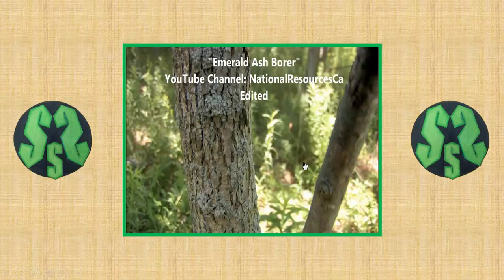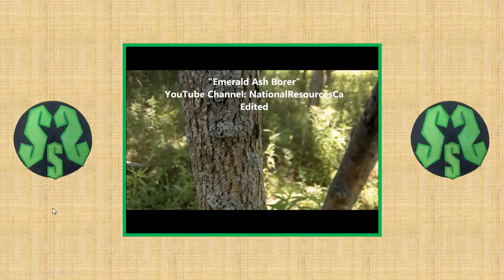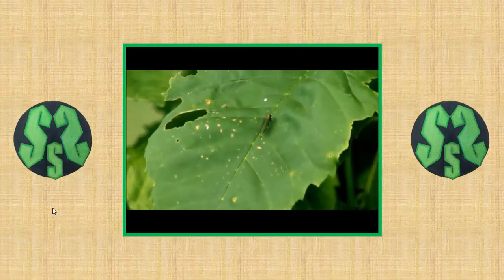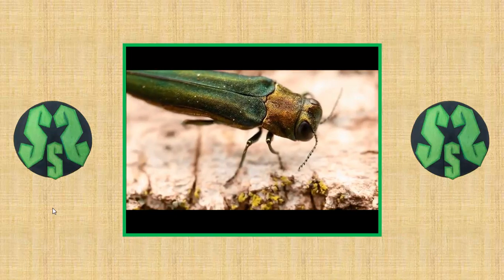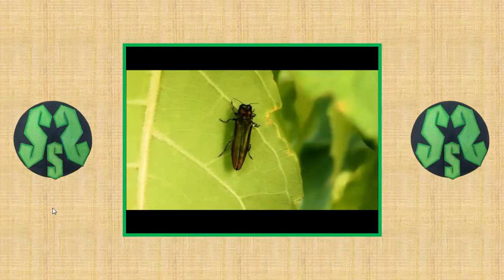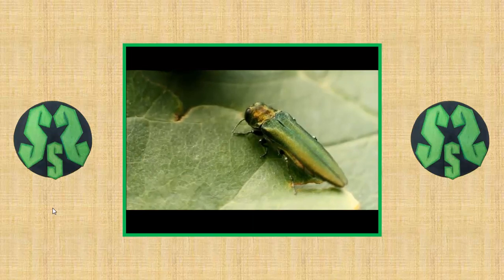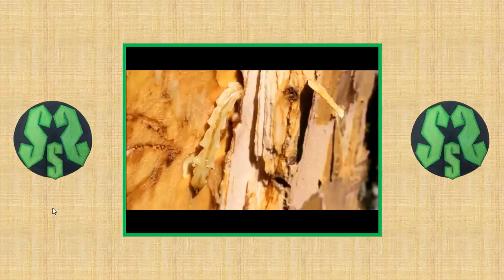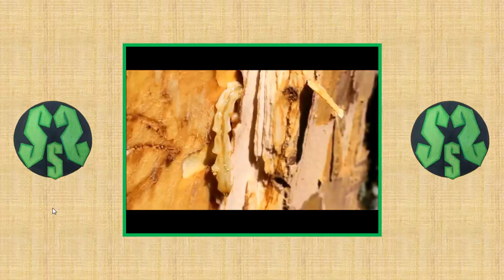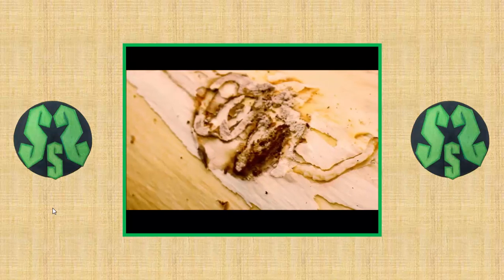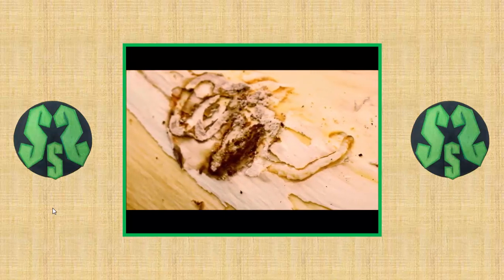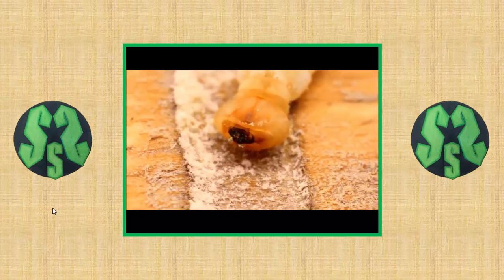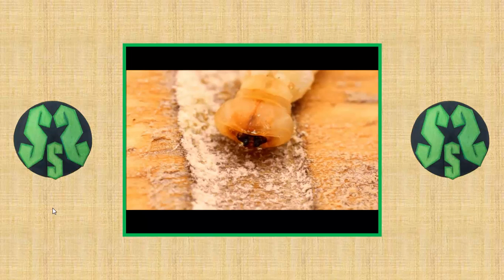The emerald ash borer is a tiny green beetle that has killed millions of ash trees in southern Ontario and the northeastern United States. Experts believe this flying beetle, which measures only 8.5 to 14 millimeters in length, arrived in North America in wood packaging from Asia. The tissue the larva feed on is very important for transporting nutrients and water up and down the tree. As the larvae feed, they damage vessels that transport fluids, eventually girdling the tree and causing its death.